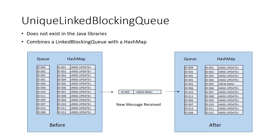There may be many good approaches, but one that we would look at further is aging. We can downsample older reports that we didn't have time to process using a unique linking block queue. This collection type does not exist in Java libraries. The collection combines a linked blocking queue with a hash map. A linked blocking queue ensures that data is processed in the same order it came in, or FIFO. The hash map ensures that there is only the most recent data report for each unique item in the collection.